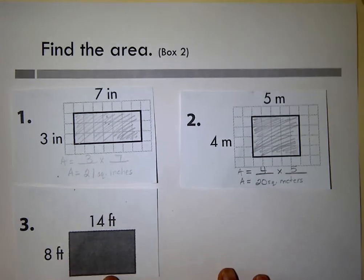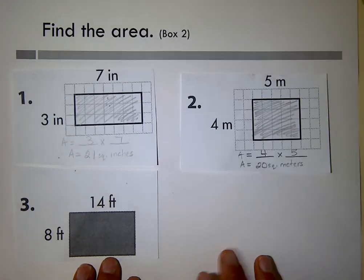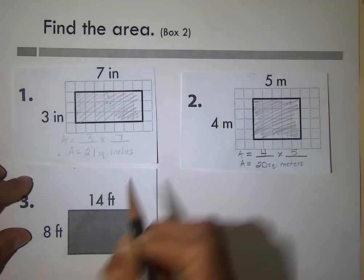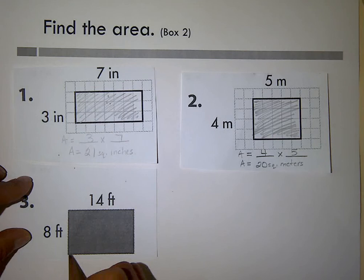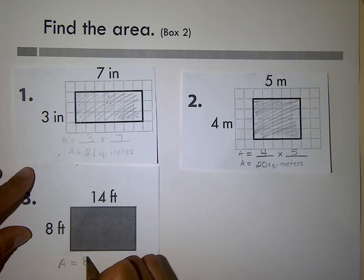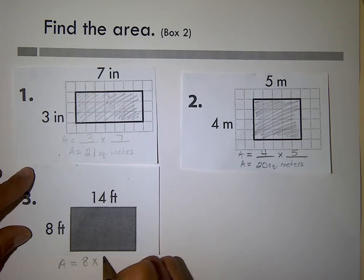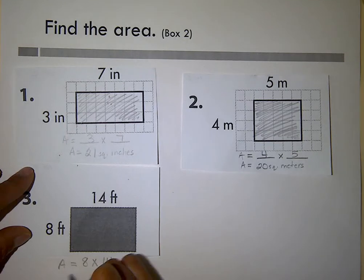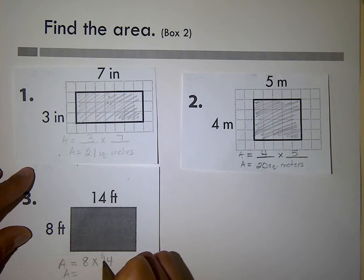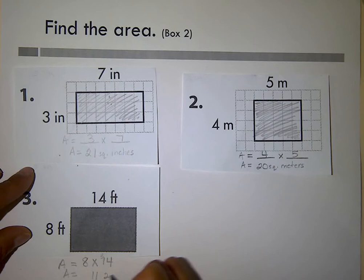Let's look at another one. I'm going to plug in my numbers. Area equals eight times fourteen. Eight times four is 32, eight times one is eight — so the area is 112 square feet.